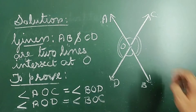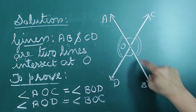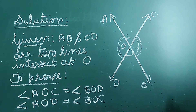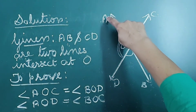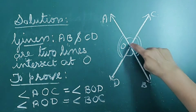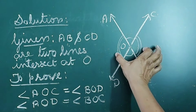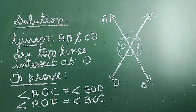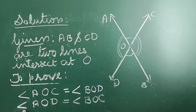We have to prove that angle AOC and angle BOD, a pair of vertically opposite angles, are equal. Or, angle AOD and angle BOC, another pair of vertically opposite angles, are equal. So, to prove: angle AOC = angle BOD, or angle AOD = angle BOC.